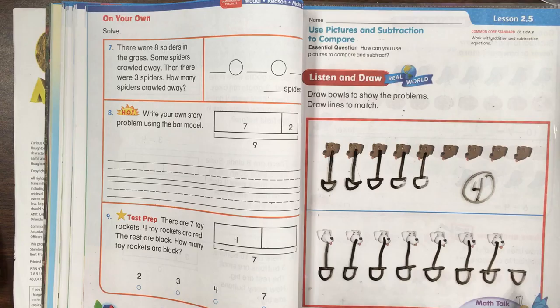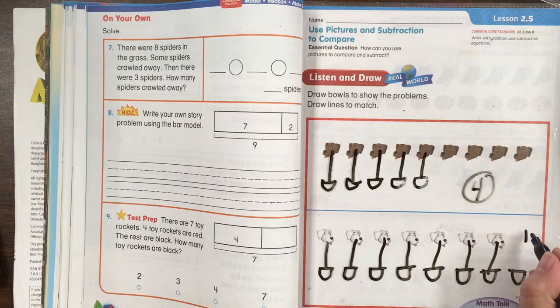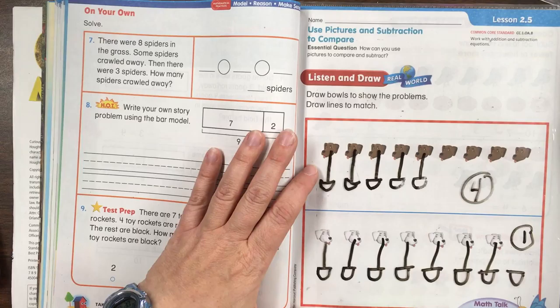This time we didn't run out of bowls, we ran out of dogs. So how many bowls aren't needed? There's one bowl that isn't needed.